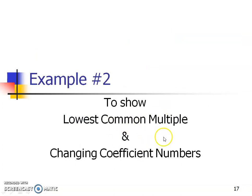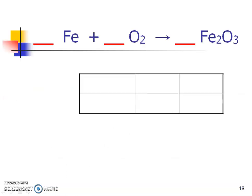Example two will explain what I mean by the lowest common multiple when dealing with coefficients. Just because you start off with a two as a coefficient doesn't mean you won't have to change it to a three, four, or five later in your balancing. Here is the second example — can you pull out those elements and figure out how many are on each side? Hopefully you paused and put iron and oxygen, and came up with the starting values. We're only dealing with two elements — they won't always be this simple.